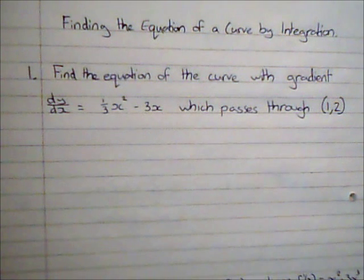So in this case, we're told dy by dx is equal to a third x squared minus 3x, and we're told that it passes through the point (1, 2).